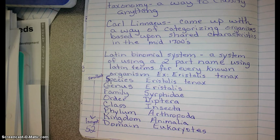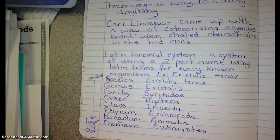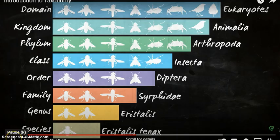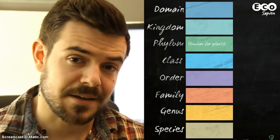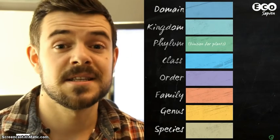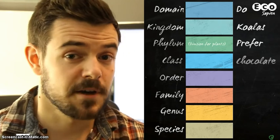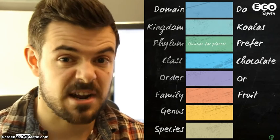Here are the taxonomic ranks listed starting with the species, which is the smallest, and going all the way up to the domain, which is the largest category. Often you'll see it as an inverted pyramid, with domain at the top going down to species. You can remember the general taxonomic ranks using this helpful mnemonic: Do koalas prefer chocolate or fruit, generally speaking? Sometimes extra ranks are needed to classify a distinctive group within a taxon, making things a little more complicated.